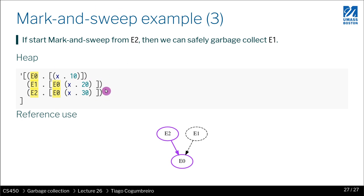So this is just another example. If we start from E2, then E2 points to E0, E0 points to nothing. In this case, only E2 points to E0, and if we garbage collect it, we could safely remove E1.